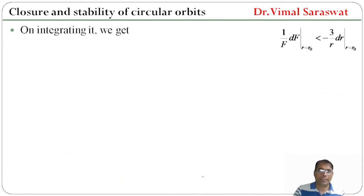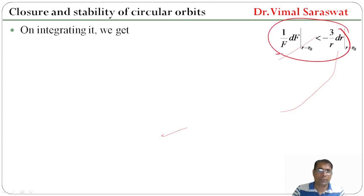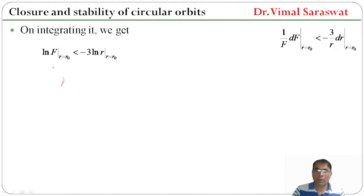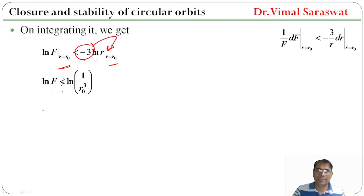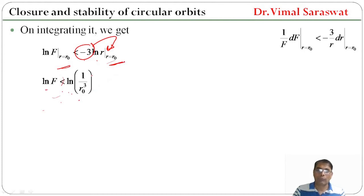On integrating both sides, since the integral of 1/F is log F and the integral of 1/r is log r, we get: log F|_{r₀} < −3 log r|_{r₀}. The multiplication factor goes into the power, so log F < log(r⁻³), or log F < log(1/r₀³).